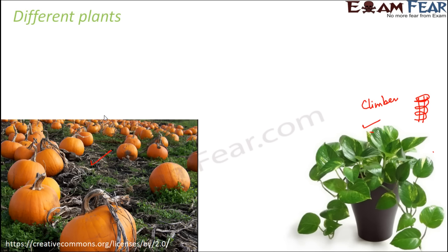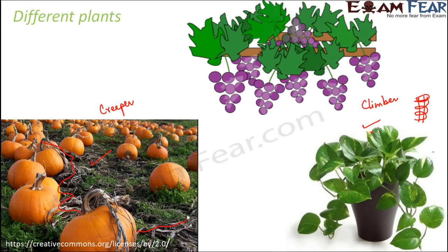The pumpkin plant is an example of a creeper — that is, they creep along the ground. They do not stand upright but grow on the ground. You can see the stem is kind of lying down on the ground and traveling along it. That's an example of a creeper.